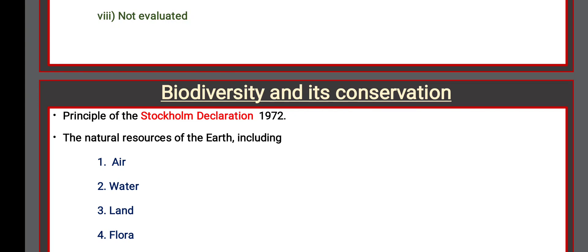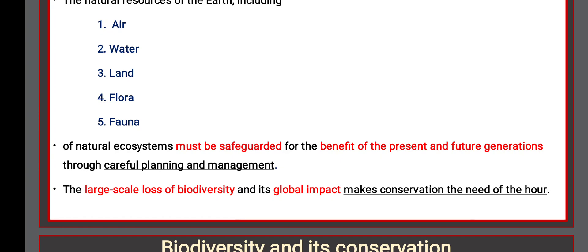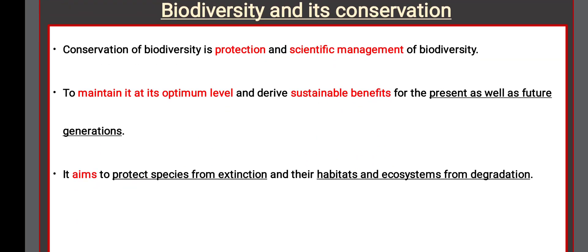Biodiversity and conservation: The Stockholm Declaration of 1972 stated that the natural resources of the Earth — including air, water, land, flora, and fauna of natural ecosystems — must be safeguarded for the benefit of present and future generations through careful planning and management. Conservation of biodiversity is the protection and scientific management of biodiversity to maintain it at its optimum level and derive sustainable benefits for present and future generations. It aims to protect species from extinction and their habitats from degradation.